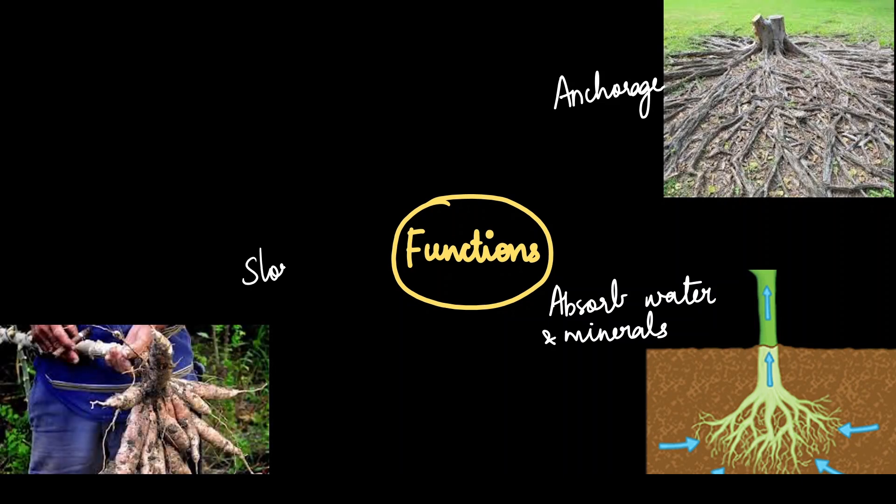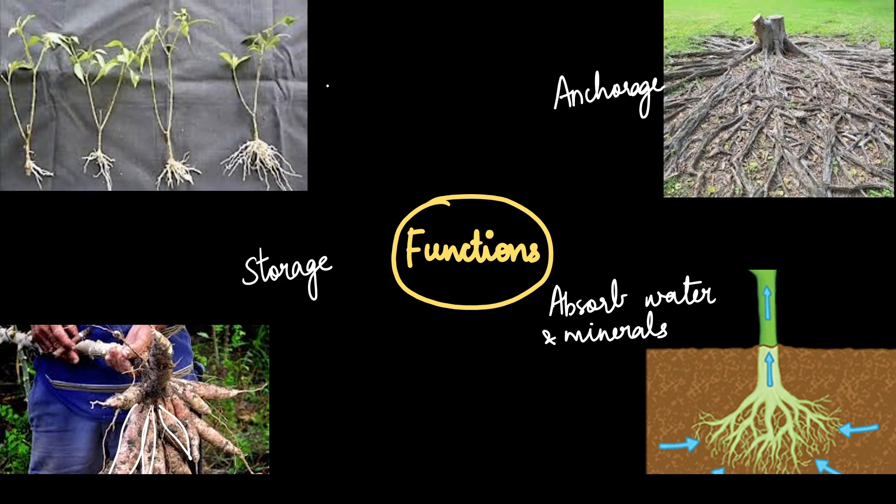Then we have the storage function. When there is excess food left over from the photosynthesis, the plants can store it in different parts. One such part is the root. This is actually an example of a tapioca root. You can see that there are these bulbous parts. These have actually swollen up because the plant is storing food in them.